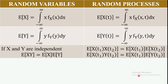In probability theory and stochastic processes, there are totally five units. Unit 1 is probability and random variables. Unit 2 is operations on one random variable and multiple random variables. Unit 3 is operations on two random variables or operations on multiple random variables. Unit 4 is random process temporal characteristics and random process spectral characteristics. Unit 5 is response of linear time-invariant systems.